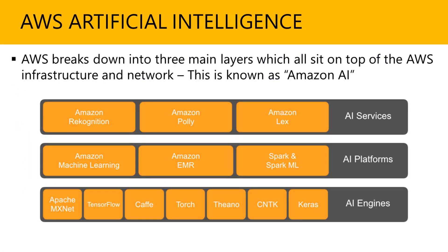The AWS artificial intelligence breaks down into three main layers. All of these sit on top of the AWS infrastructure and network, known as Amazon AI. On top, you have the AI services, which include Amazon Rekognition, Amazon Polly, and Amazon Lex. Then you have the AI platform in the middle: Amazon Machine Learning, EMR, and Spark. The third layer is the engines that drive it — you can have Apache, TensorFlow libraries, Caffe, PyTorch, and so on.